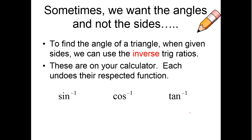Now, sometimes you want the angles and not the sides. Sometimes you don't have the angles. So, if you need to find the angle of the triangle, when given your sides, you're going to use what's known as the inverse trig ratios. Usually, that is like sine of negative 1 or cosine of negative 1 or tangent of negative 1. So, basically, these are on your calculator and each undoes their respected functions. So, sine inverse undoes sine. We just talked about inverse functions recently. Inverse functions undid each other, right? So, like cube undid a cube root and vice versa.